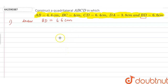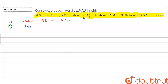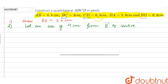We have drawn a line segment of 6.6 centimeters. Now, the next step is: we have BC and CD. So what we are going to do is cut an arc of 4 centimeters by keeping B as the center, and then cut an arc of 6.4 centimeters by keeping D as our center. So we cut an arc of 4 centimeters from B as center using a compass, and then cut an arc of 6.4 centimeters from D as center.